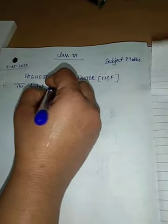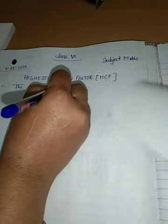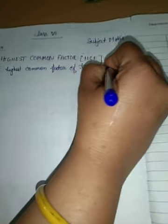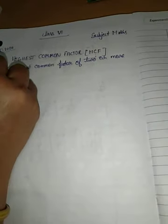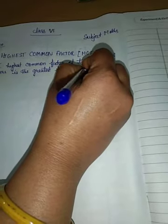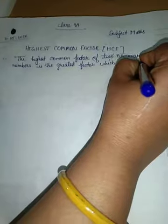HCF, the highest common factor of two or more numbers, is the greatest factor which is common to both the numbers.